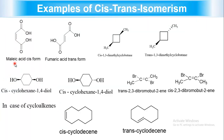Examples: maleic acid shows the cis form and fumaric acid (same formula) shows the trans form. In cis-1,3-dimethylcyclobutane the two methyl groups are on the same side, while the trans isomer has them on opposite sides. Similarly, trans-dibromocycloalkane has two bromo groups on opposite sides; cis has them on the same side. For OH groups, if both are on the same side it is cis. In cycloalkanes, cis and trans configurations also apply based on the geometry of substituents.